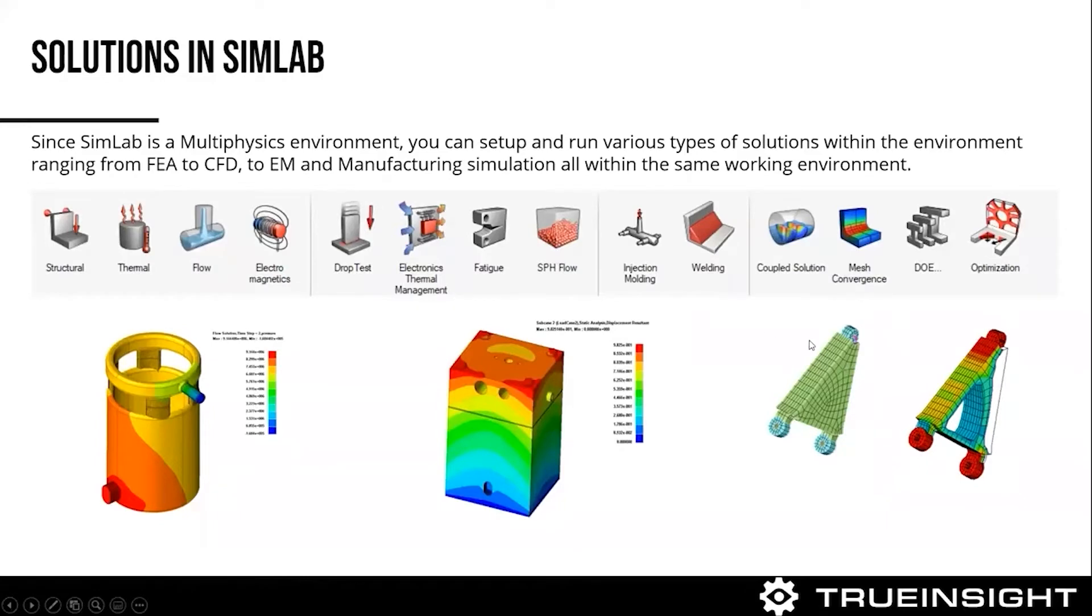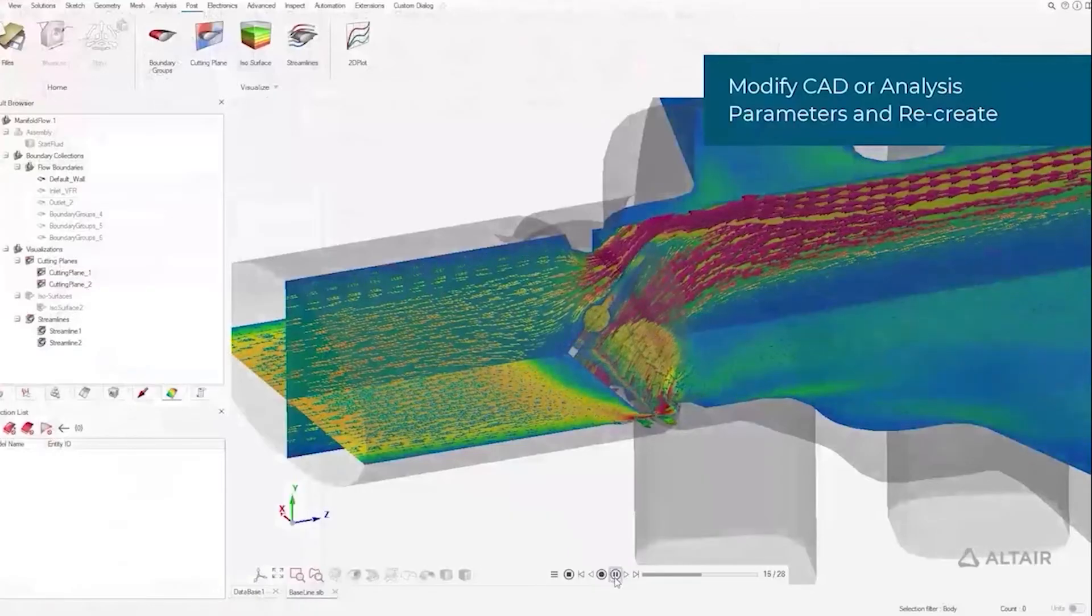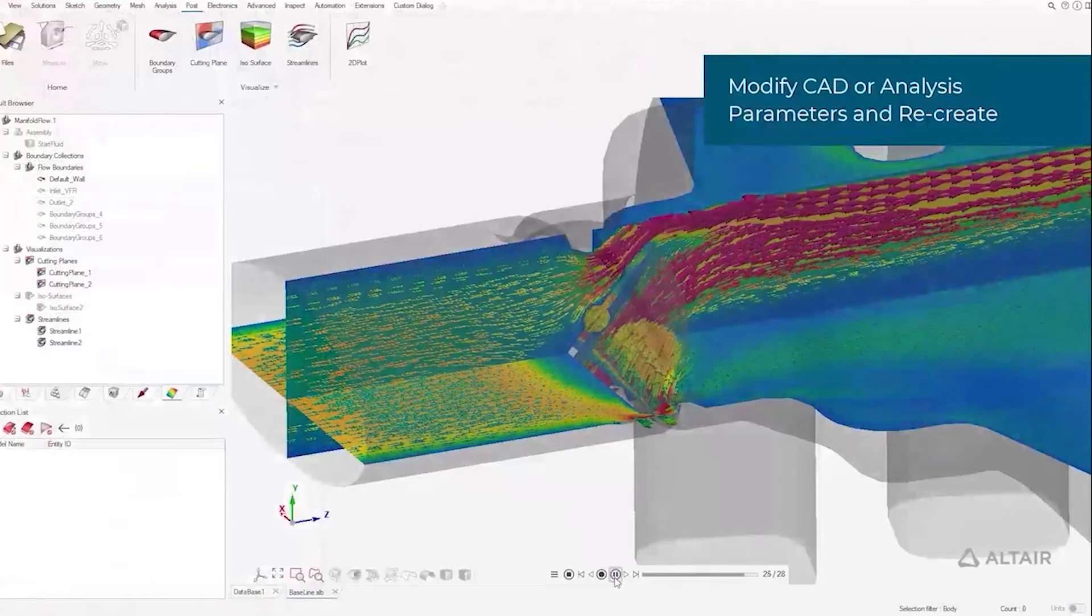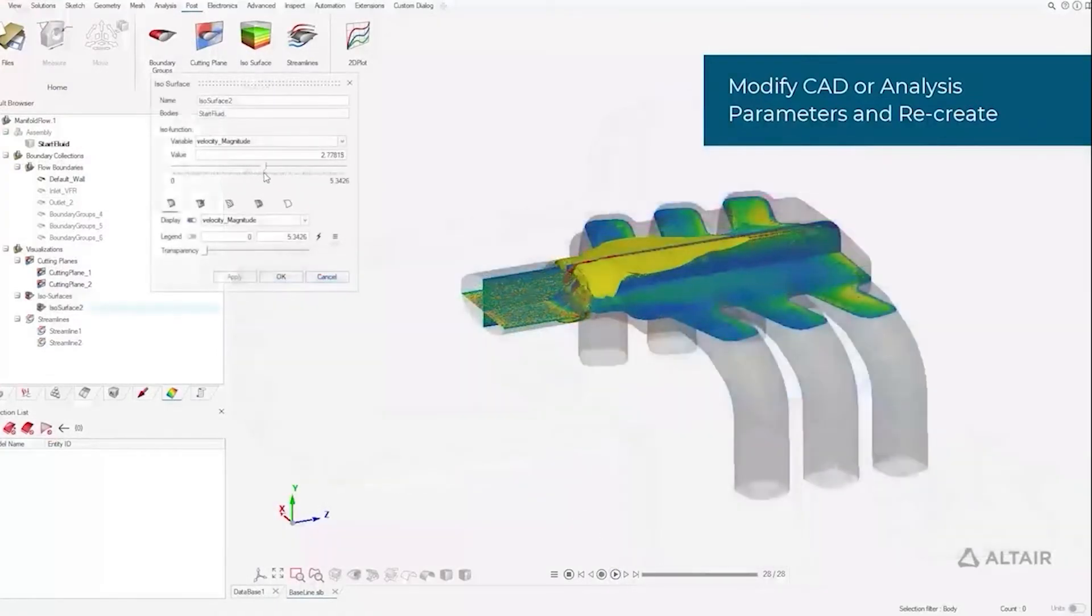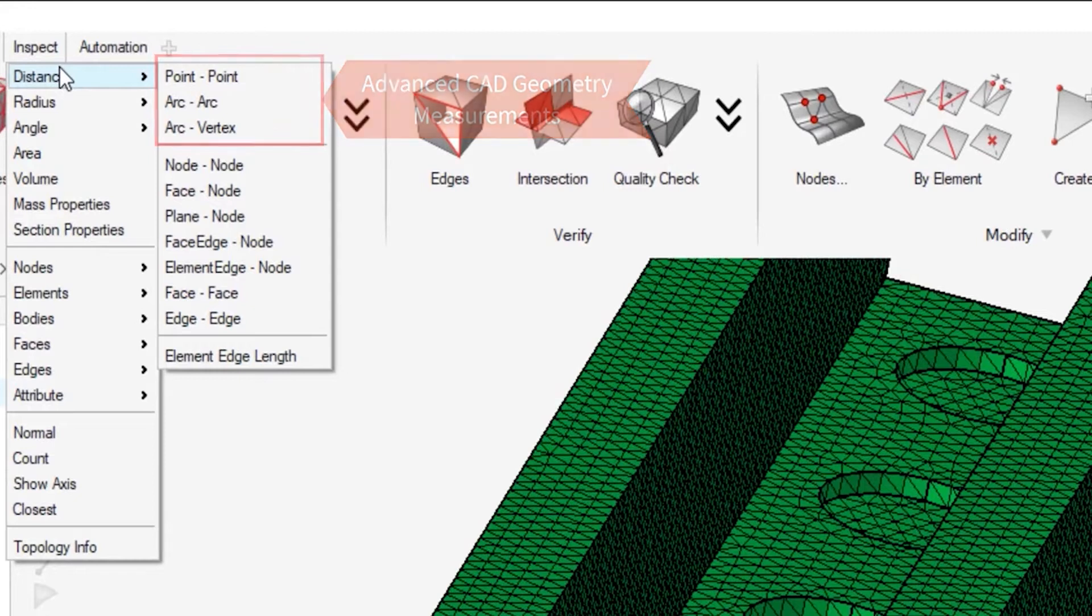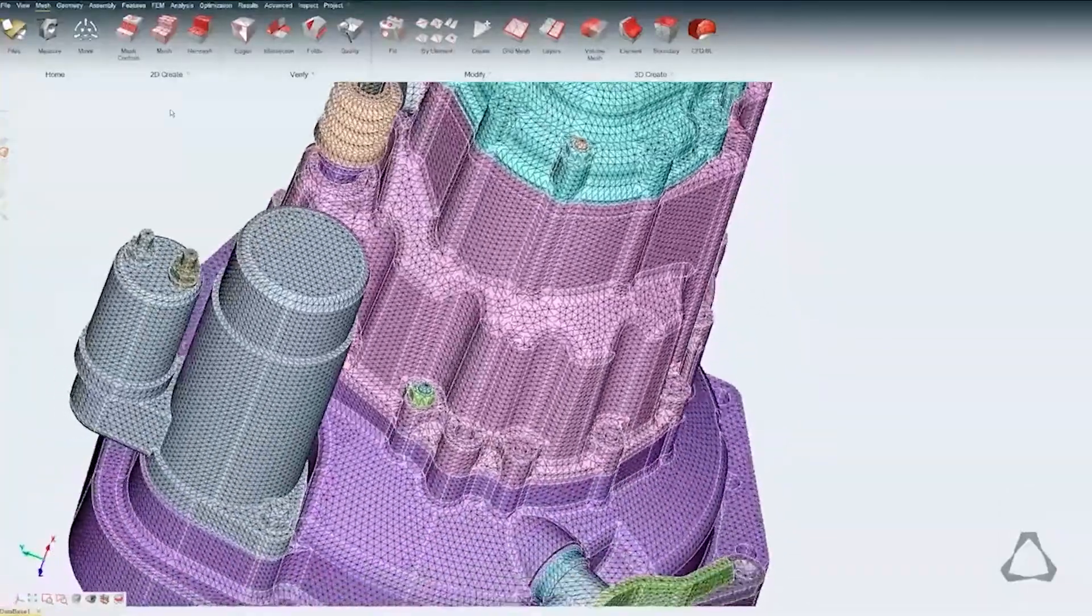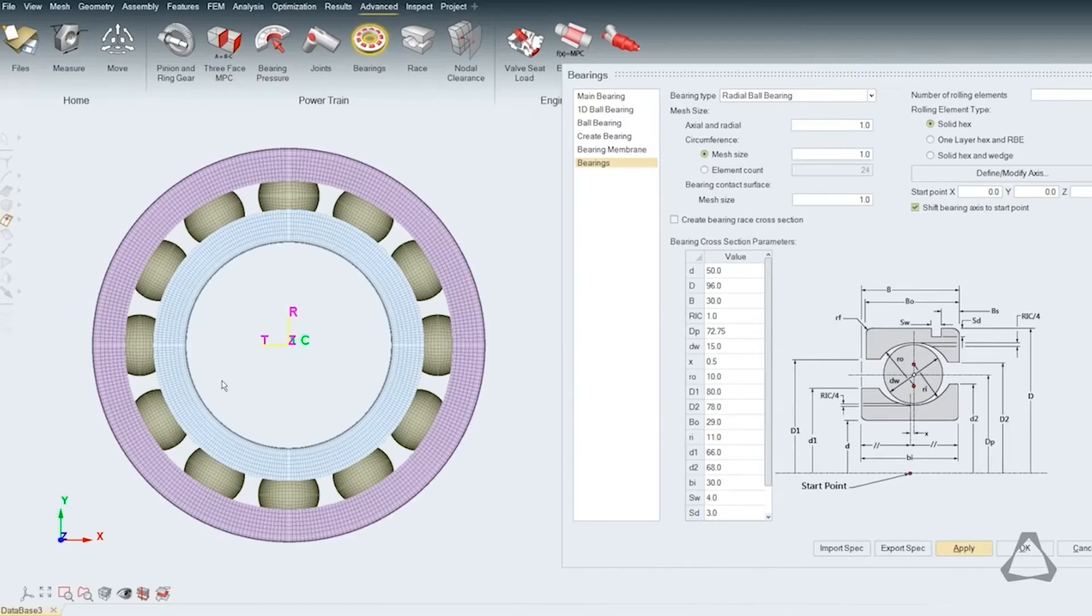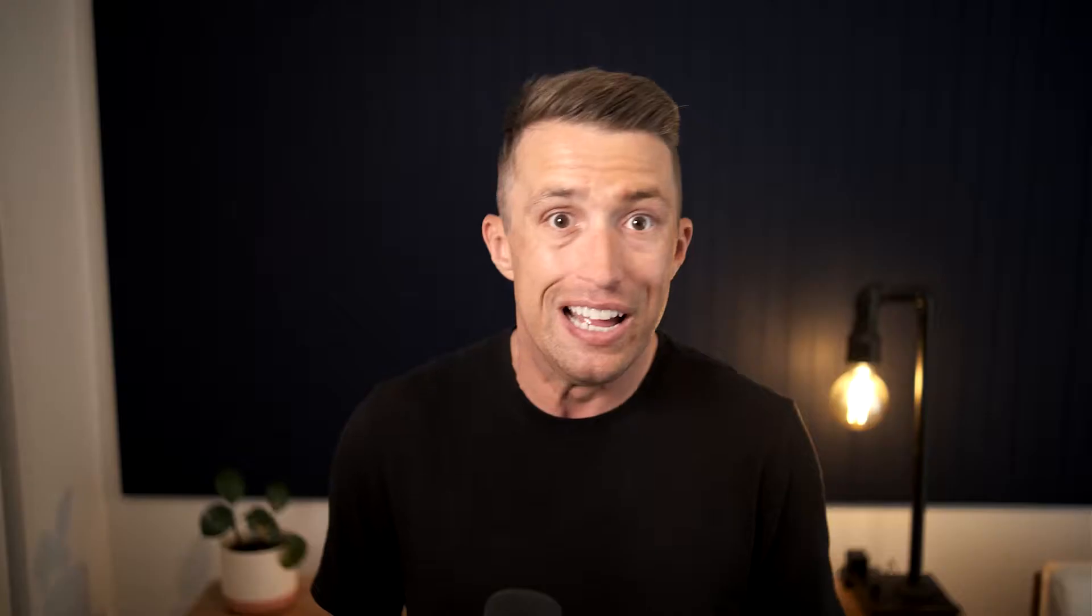SimLab users can run true multi-physics coupled analysis with structural, fluid, and electromagnetic variables. On the structural side, you can run linear, non-linear, transient or steady-state thermal, static and dynamic testing, then couple it with the built-in CFD capabilities using the Altair AccuSolve solver for heat transfer and fluid flow, then use coupled electromagnetic tools for a complete picture. One incredibly powerful feature in SimLab is the ability to create automated workflows without coding expertise - the built-in automation tools allow users to speed up the process dramatically.